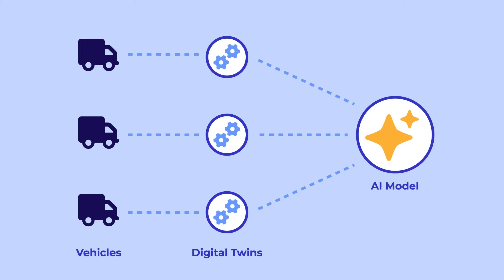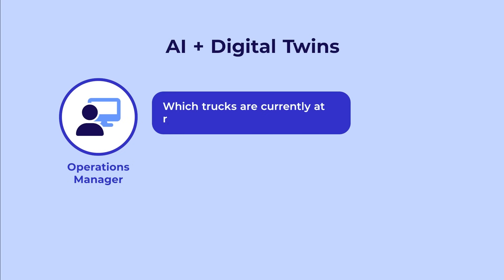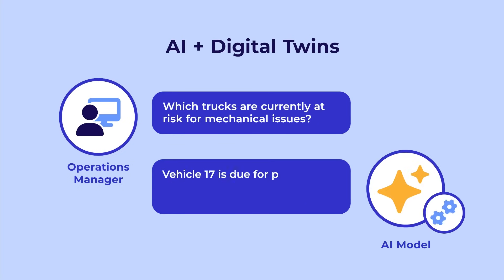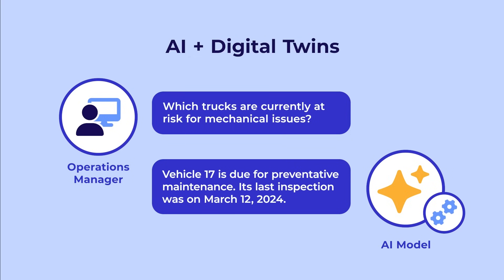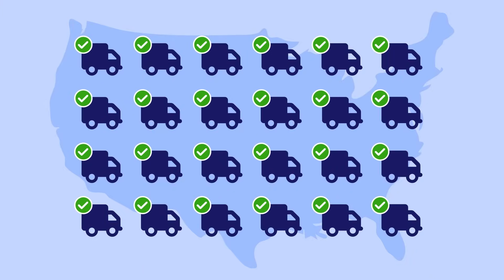By continuously tracking each vehicle, digital twins enable the AI model to retrieve the latest information and give you precise, up-to-the-minute insights that help you make well-informed decisions and keep operations running smoothly.